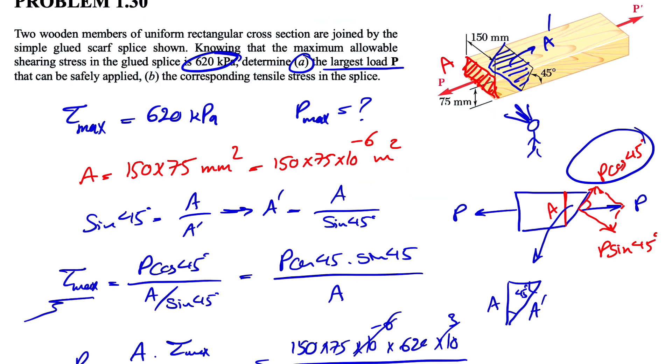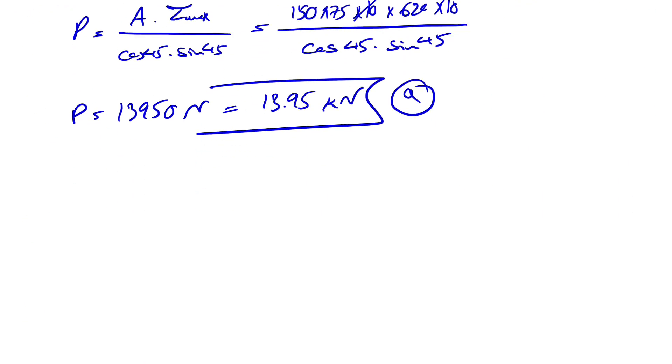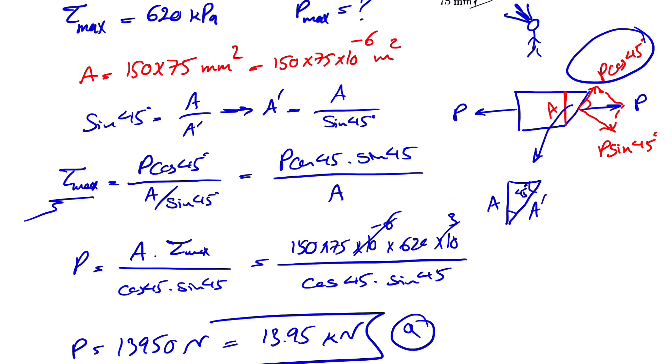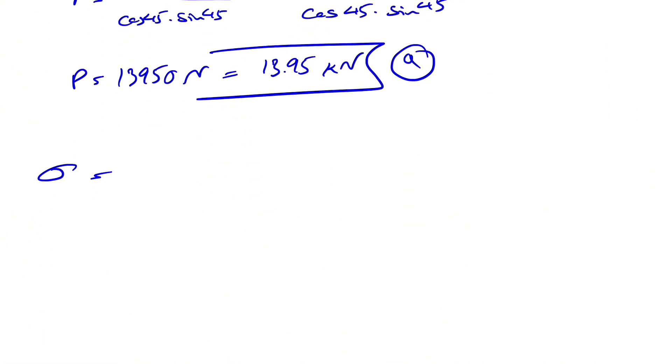So in the B part, we need to find the corresponding tensile stress. And for finding that we have, this time, the normal force, which if we look at it will be P sine of 45 degrees.